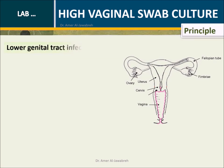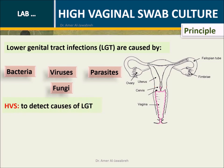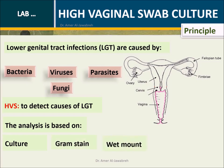Principle: Lower genital tract infections (LGT) are caused by bacteria, viruses, parasites, and fungi. HVS is used to detect the causes of LGT. The analysis is based on culture, gram stain, and wet mount.